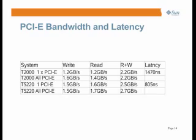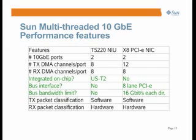We integrated two 10 gig XAUIs directly onto the chip — the NIU. We've also made our own NIC called Neptune, on a PCI Express card called Atlas, which shares the exact same silicon as the Niagara 2 NIU, except with four additional DMA channels for the PCI Express link. The on-chip NIU gives you two 10 gig ports, eight DMA channels transmit, eight DMA channels receive, and hardware classification at layers one, two, and three. The big advantage of integrated NIU is much lower CPU overhead since you don't pay the cost of the PCI Express protocol middleman.